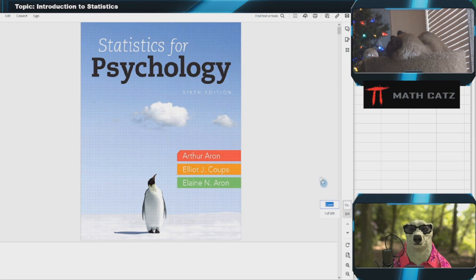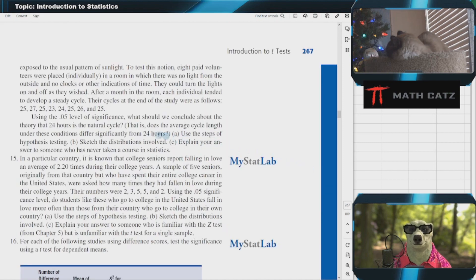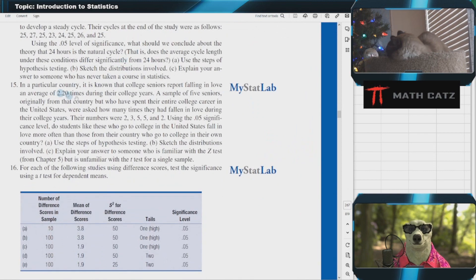We're going to look at page 267, number 15. In a particular country, it is known that college seniors report falling in love an average of 2.2 times during their college years. A sample of five seniors originally from that country but who spent their entire college career in the United States were asked how many times they had fallen in love during their college years.